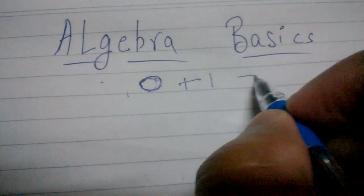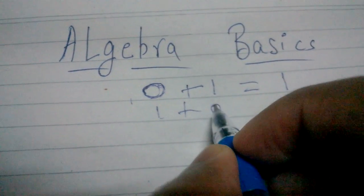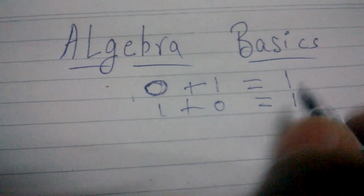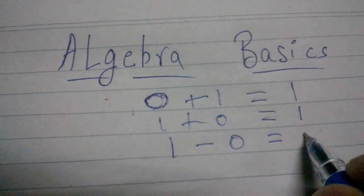So 0 plus 1 is equal to 1, 1 plus 0 is equal to 1. Okay, 1 minus 0 is equal to 1.